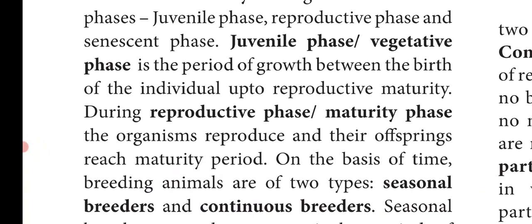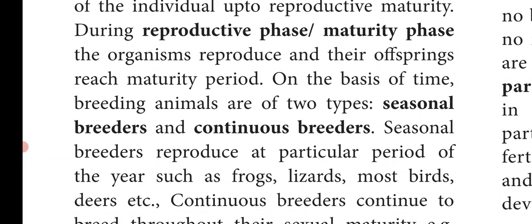The next phase is the reproductive phase or the maturity phase. During this phase, the organisms attain maturity, they reproduce and produce their offsprings. Their offsprings again reach maturity. So the reproductive phase is the period during which the organisms reproduce and their offsprings reach maturity.